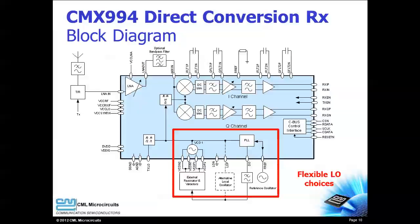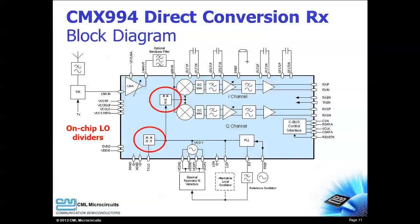The CMX994 provides you with flexible LO choices. An on-chip negative resistance amplifier can work with external varactors to provide a low-cost VCO. An external LO can be injected if desired. The on-chip integer N PLL reduces external parts count. On-chip LO dividers are provided for receive and for transmit, meaning a single LO can serve both receive and transmit operation, providing additional cost savings.